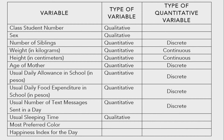Number eight: usual daily food expenditure in school — this is quantitative. For time-related variables, you can just say 10 o'clock or 11 o'clock. Number nine: most preferred color — this is qualitative. Number ten: happiness index for the day, rated 1 to 10 — just like what was discussed earlier, this is still qualitative.